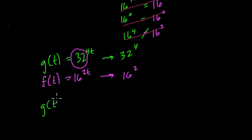If g(t) equals 4 to the 4t, the square root of 16 is 4. So it's 4^(4t) versus f(t), which is 16^(2t). Now, at first glance, you might not be able to see how these things are equal. But play with it a little bit.